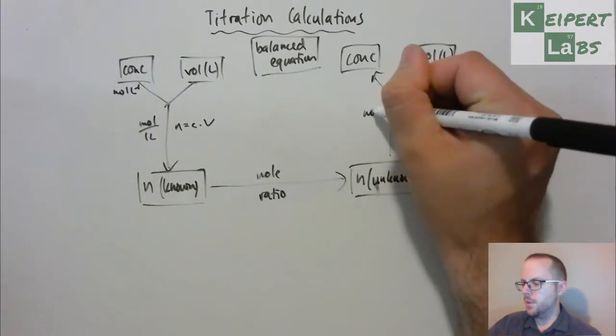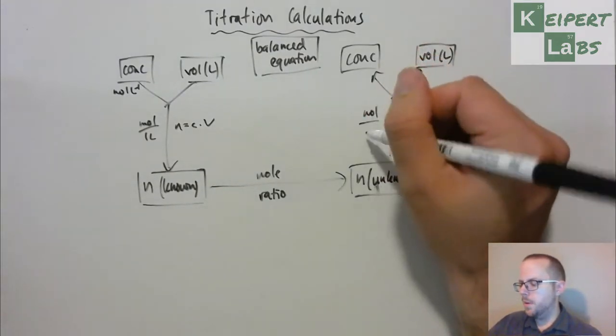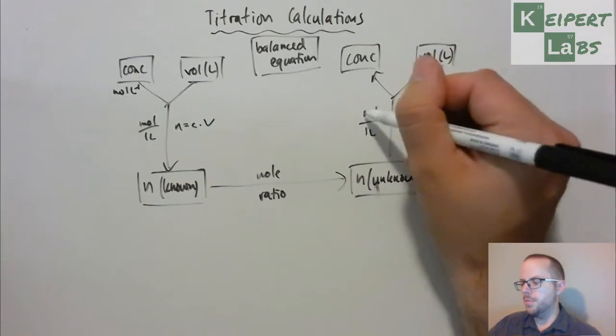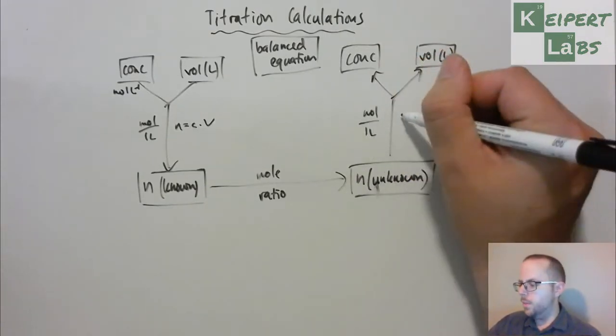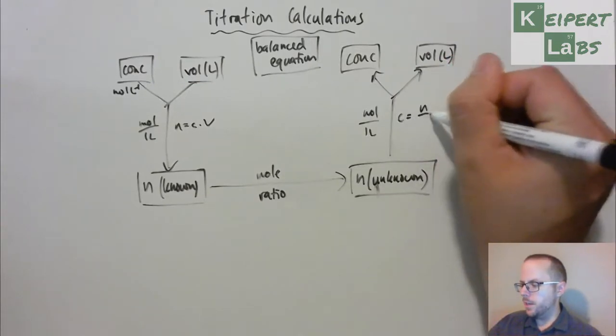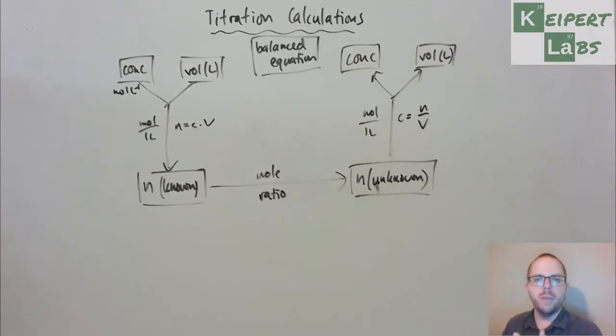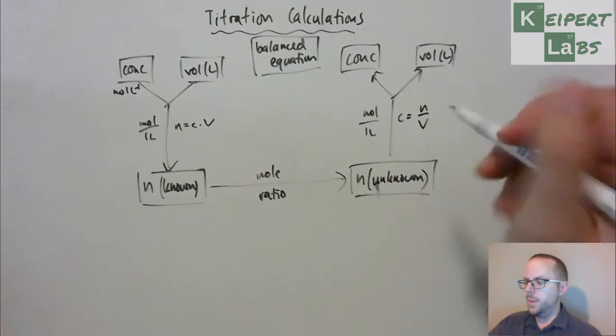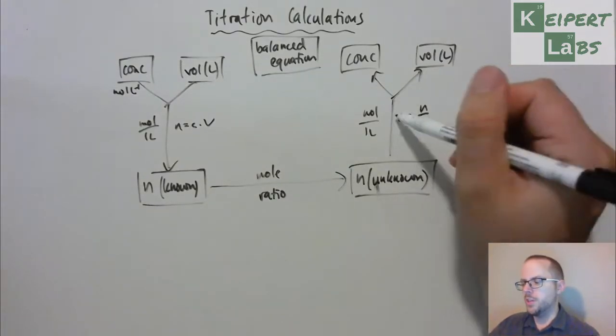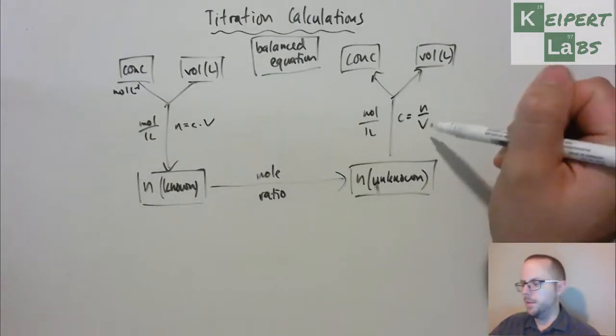Over on this side, we can do the same approach. We can use the relationship of however many moles for every one litre, or we can rearrange that formula. Depending on your comfort with the algebra or familiarity with the factor label process, we can use this formula. The concentration is equal to the moles divided by the volume.